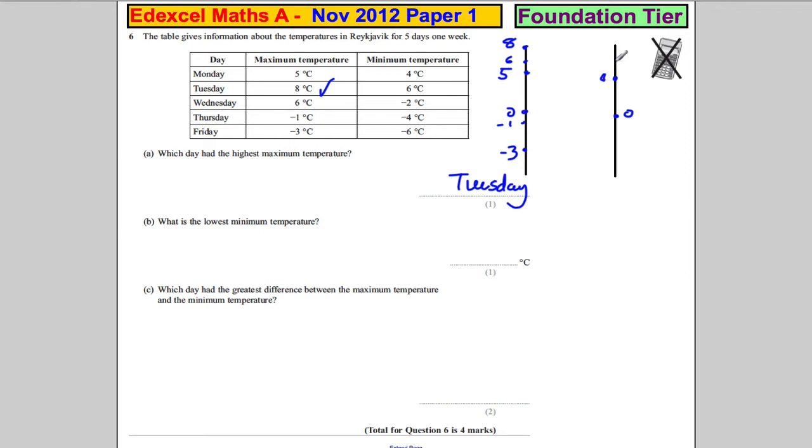Then the minimum temperature, we have a four, we have a six, we have a negative two, a negative four, and a negative six on the thermometer. Which was the lowest? It's negative six, and that's a Friday.